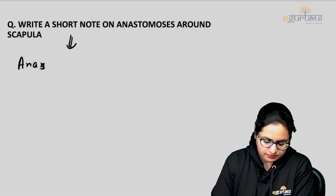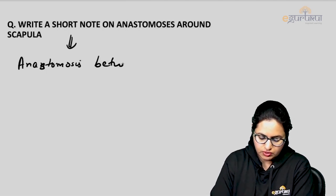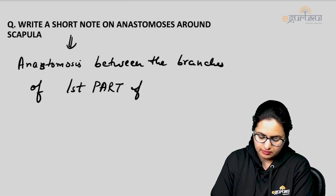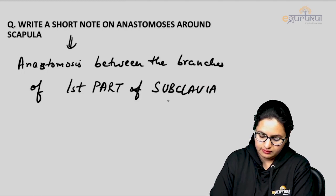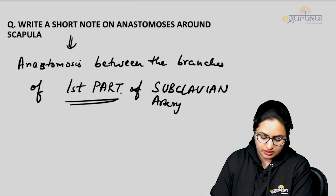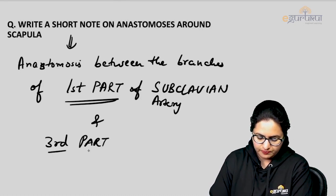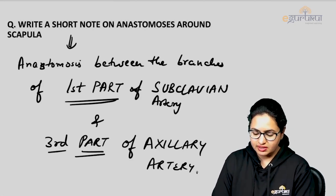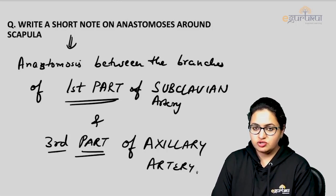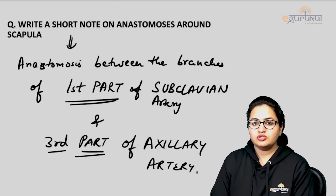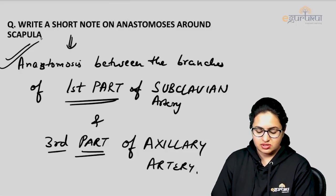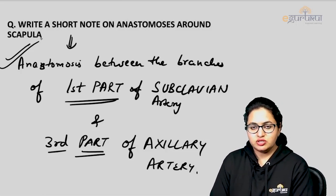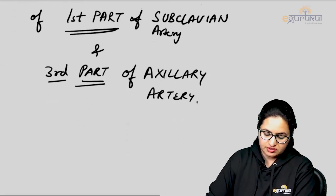The clinical significance of this anastomosis is that if there is any obstruction or injury of the artery between these components, the circulation of the upper limb is maintained by this collateral anastomosis. Blood is bypassed through this anastomotic network around the scapula, so circulation to the upper limb is not affected.